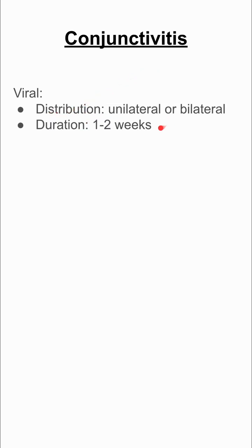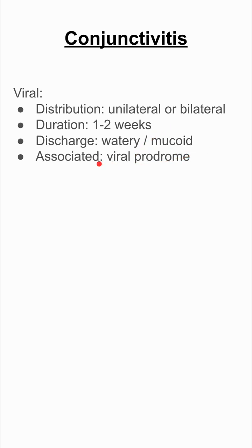Let's start with viral conjunctivitis. The distribution can be either unilateral or bilateral. The duration is typically one to two weeks. The discharge here is watery or mucoid. It's associated with a viral prodrome, so the patient might have a runny nose, cold or cough symptoms, or sore throat before the conjunctivitis.